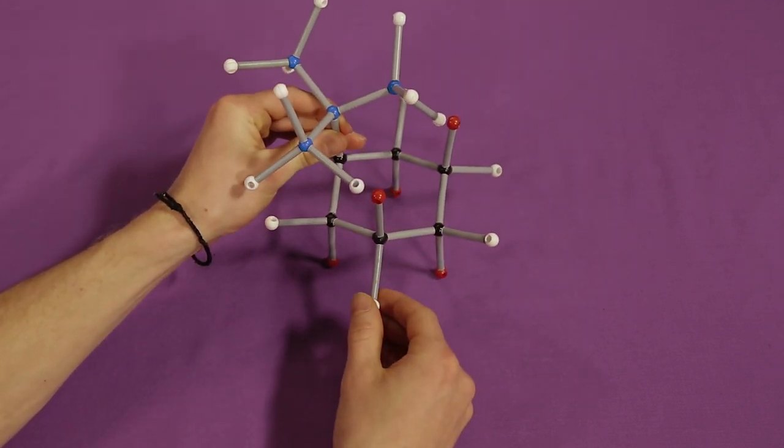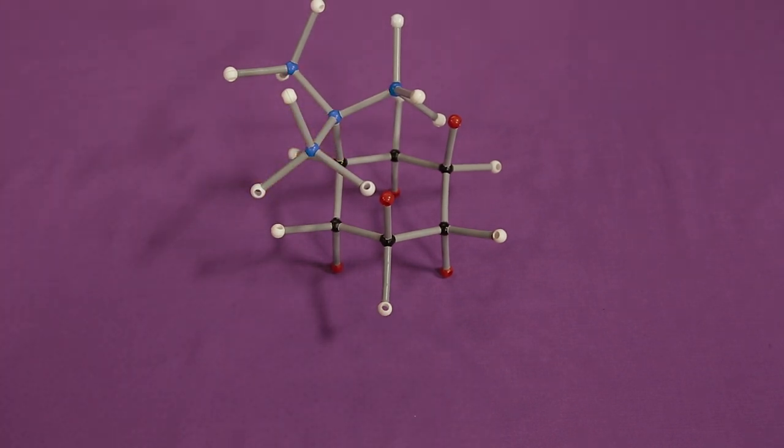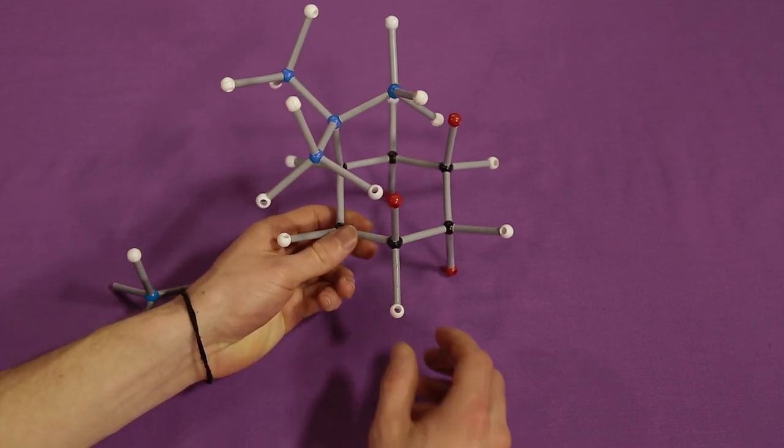For this model to be trans, the substituents need to be pointing in opposite directions. Since we place the tert-butyl in an axial position pointing up, we need to place the methyl on carbon-3 so that it is equatorial pointing down.